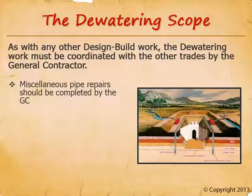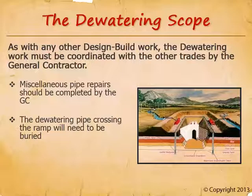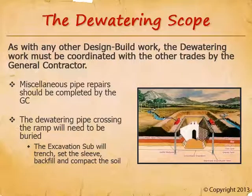Miscellaneous pipe repairs should be completed by the general contractor. Dewatering systems are cheap, flimsy, made of PVC, and pretty easily breakable — but for good reason; there's no reason to spend more money than necessary on these temporary systems. But this PVC is going to break, and when it does, it needs to be fixed quickly. PVC is really easy to patch, so there's no reason to spend $500 or $1,000 to have a dewatering subcontractor send a guy out to fix it. The general contractor should just keep a stock of materials on site and have their laborers fix the breaks as they occur. The dewatering pipe crossing the trucking ramp will need to be buried. Most dewatering pipes are typically installed on guardrail posts around the excavation, but the pipe across the truck ramp needs to be buried. Because dewatering subcontractors don't usually have backhoes on site, the excavation sub will usually trench, set the sleeve, backfill, and compact for this buried pipe — they just need to be directed to in the bid instructions.